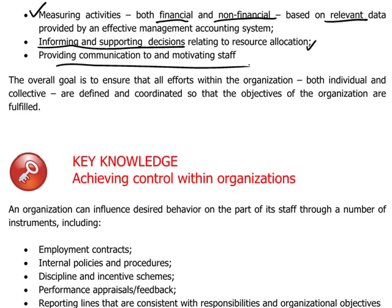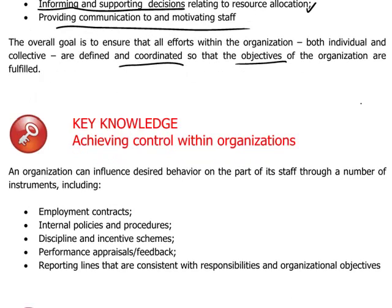The overall purpose of such management controls is to make sure that effectively everyone is pulling in the same direction — that their activities are coordinated and therefore that the objectives of the organization as a whole can be achieved. It is the responsibility of senior management to make sure that such controls are in place and that they are consistent with the objectives of the organization.